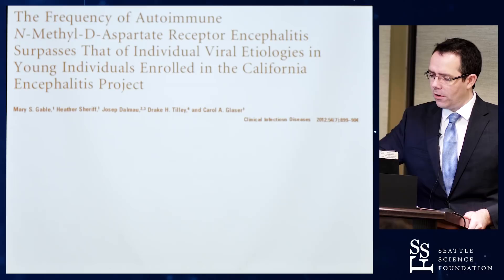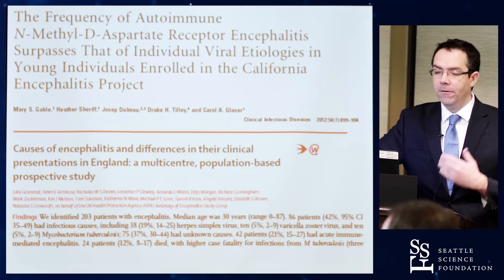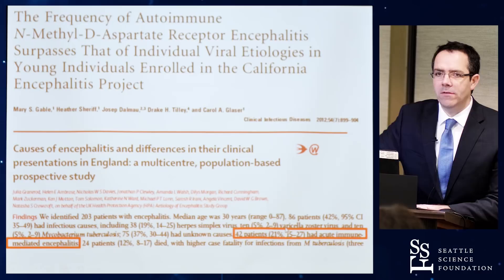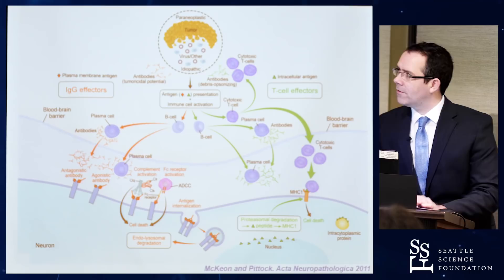The Dalmau group looked at patients from the California Encephalitis Project and found that NMDA receptor encephalitis was quite frequent in younger patients, rivaling viral encephalitis. A nationwide study in the UK showed that 21–42% of patients had autoimmune encephalitis as their etiology. Certainly we are starting to recognize this more and more, and it is something that is potentially treatable.